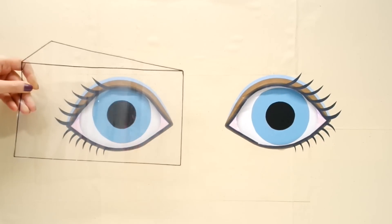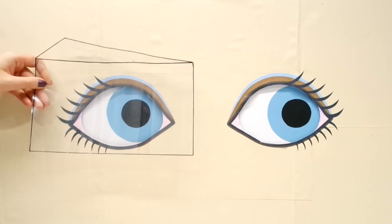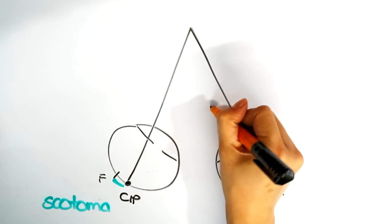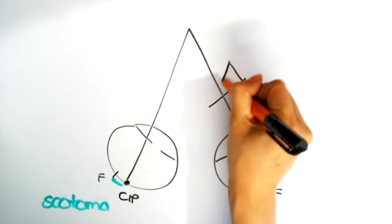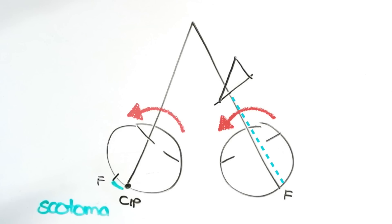When we put the prism on the non-deviating eye you should see the eye under the prism move in and the conjugate movement of the other eye moving out. You won't see the conjugate eye moving back in to retake fixation as the image has now fallen on the scotoma.